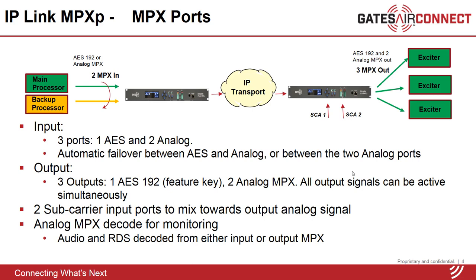MPXP supports multiple input ports — a total of three: one AES and two analog ports for redundancy of the audio processor. You can connect a main and a backup audio processor and set up the ports for automatic failover. On the outputs, there are three output signal ports as well: one AES 192 and two analog MPX ports. All three can be active simultaneously so you can feed up to three different exciters. There are also two subcarrier input ports to mix in signals for the analog output signal.